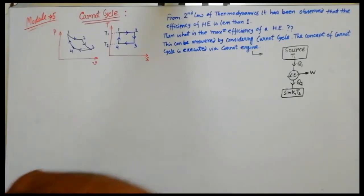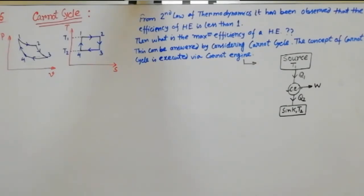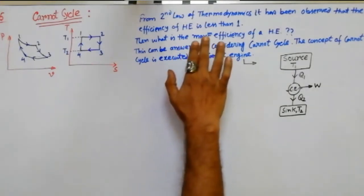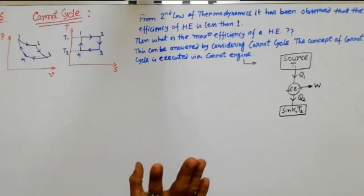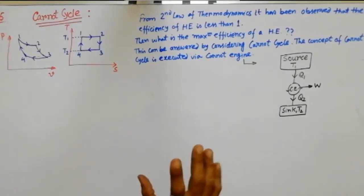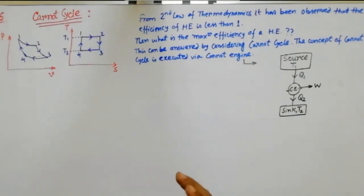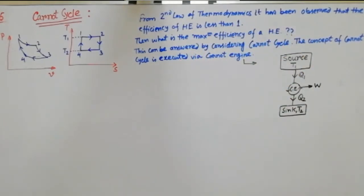We are going to see the Carnot cycle. Carnot cycle is very important from a thermodynamics point of view. In the discussion of the second law of thermodynamics, the Carnot cycle is important because from the second law it has been observed that the efficiency of a heat engine is less than one. Some amount of heat must be rejected from the heat engine. Now, what is the maximum efficiency of a heat engine? That answer we can get by using the Carnot cycle.